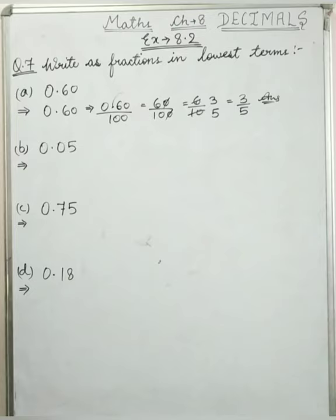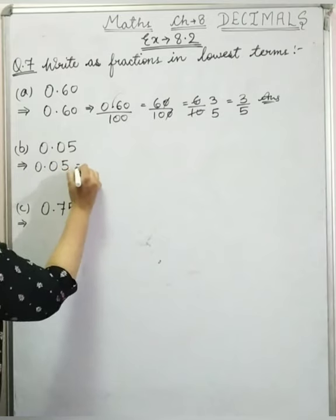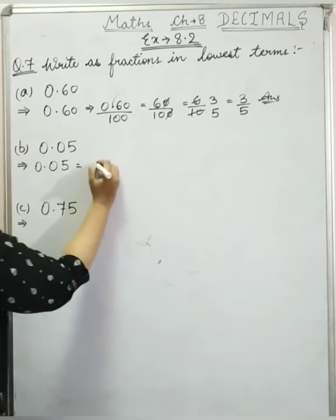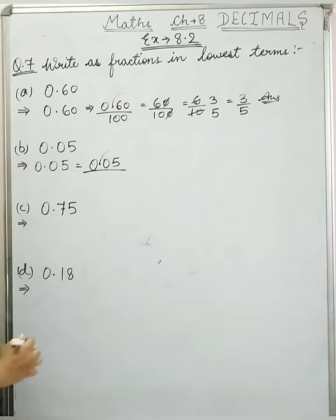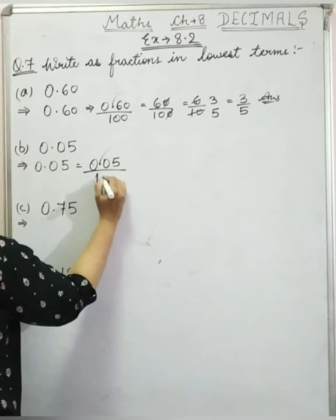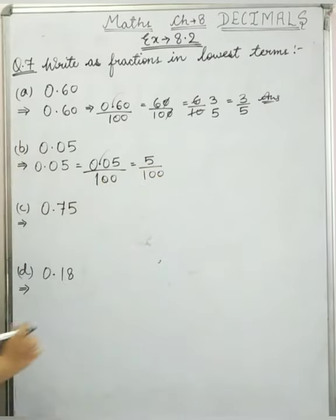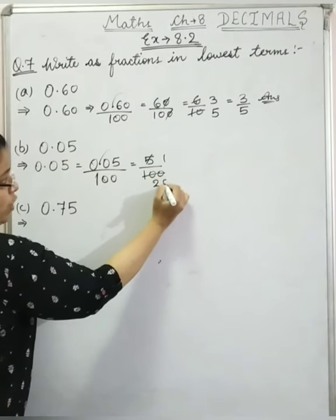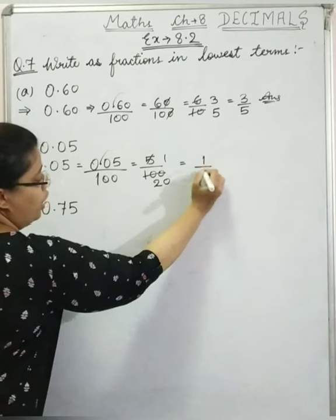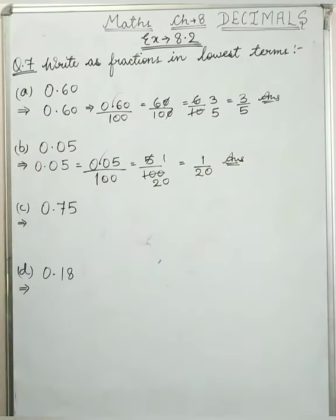Now next is b: 0.05. We remove the decimal. After the decimal there are 2 digits, so 2 zeros in the denominator: 5 upon 100. Now 5 and 100 have a common factor of 5. Dividing both by 5: 5 divided by 5 is 1, and 100 divided by 5 is 20. So the answer is 1 upon 20, which is our lowest form.